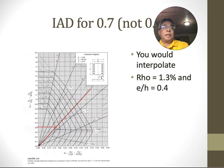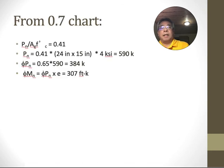I went over and got this point right there. I read that off the graph as 0.41. That's Pn over Ag f'c, so I take 0.41 times f'c times the area. I get 590 kips, phi Pn is 384, and the moment is just e times P, and that comes out to 307 foot-kips.